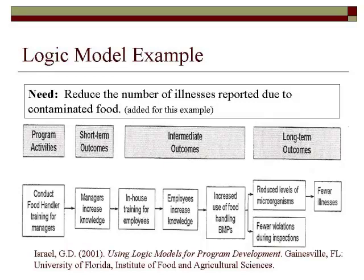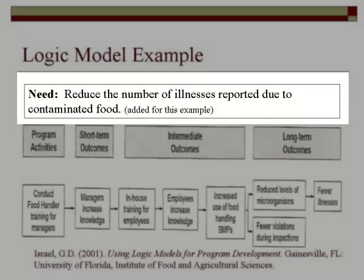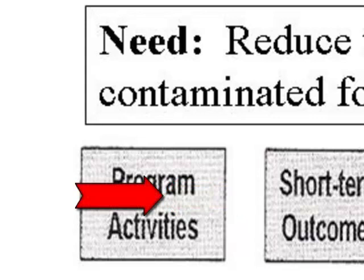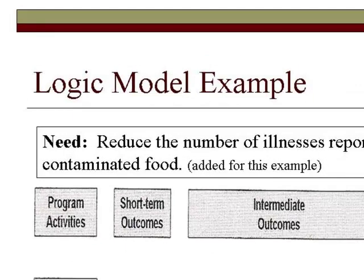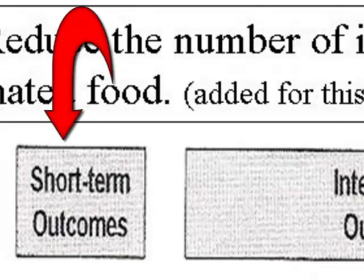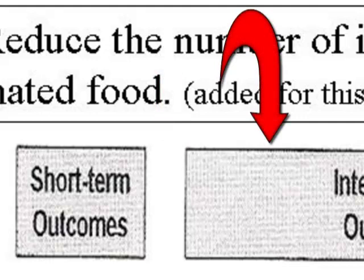In this example, our fictitious company has identified a need to reduce the number of illnesses reported as a result of contaminated food. To address this need, they have decided to offer a food handler training for managers. As you can see, the first short-term outcome of this training is an increase in managers' knowledge of best management practices for food handling. Next, our example has several intermediate outcomes expected to follow from the increase in managers' knowledge. Managers are to provide in-house training for their employees, which in turn will increase employees' knowledge of food handling techniques. This will result in an increased use of best management practices for food handling.